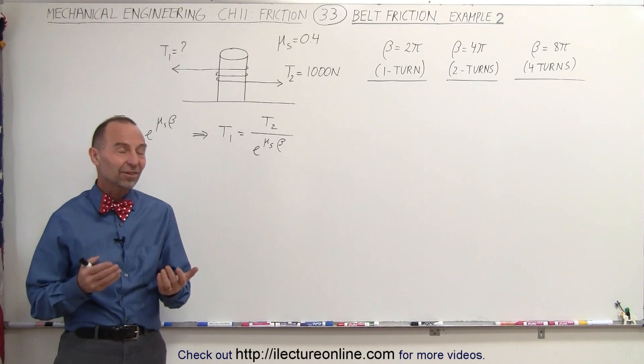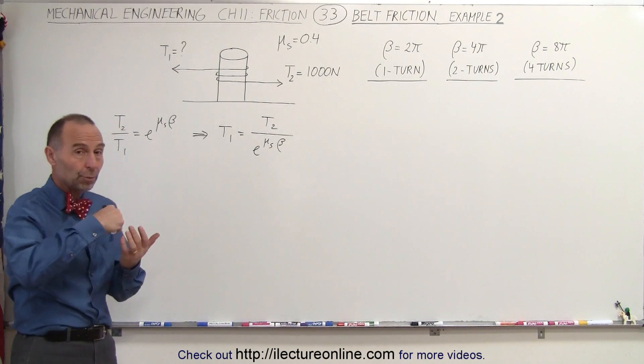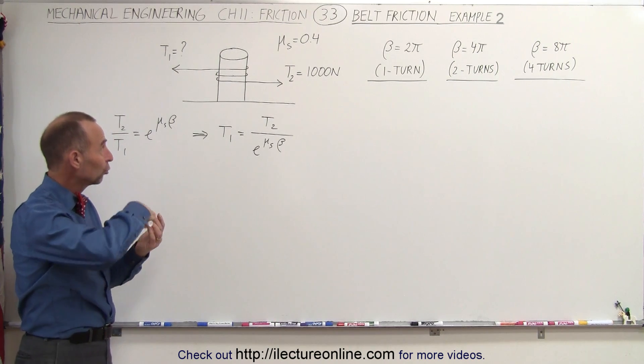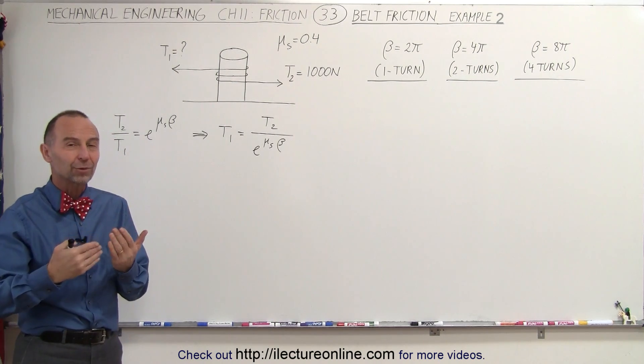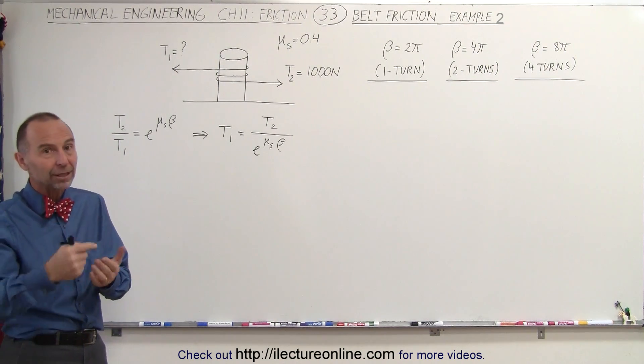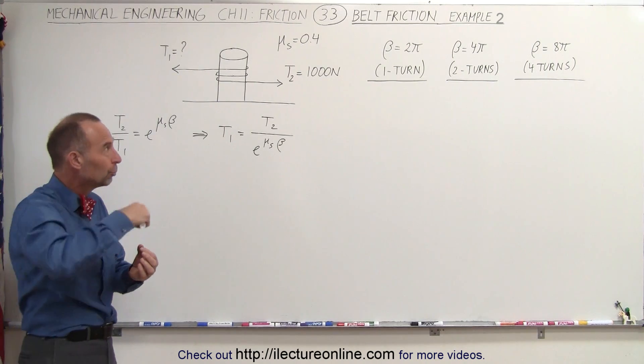Welcome to our lecture line. In this example, we're going to wrap the rope around the post once, twice, and four times. In essence, each time doubling the number of turns and number of loops around the post.